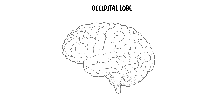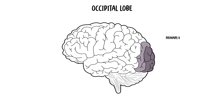The occipital lobe is located below the occipital bone. It is the most posterior part of the cerebrum. The occipital lobe contains the primary visual cortex, meaning that its cortical association area is responsible for vision.